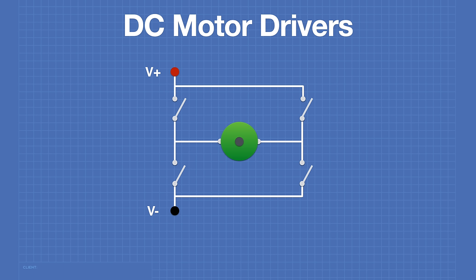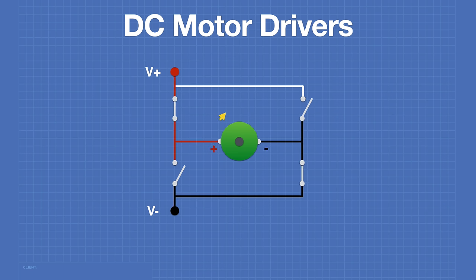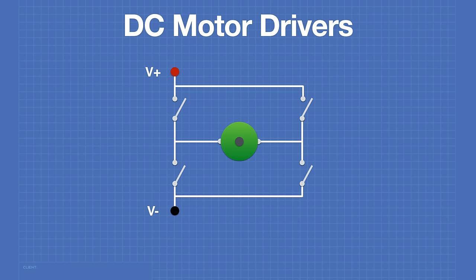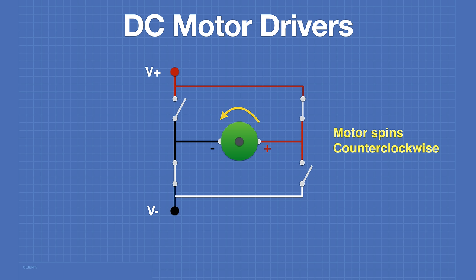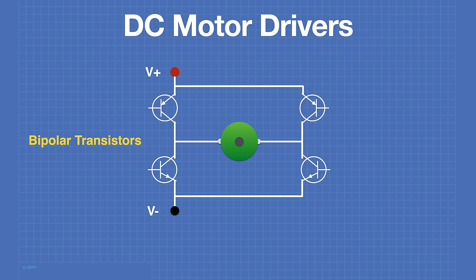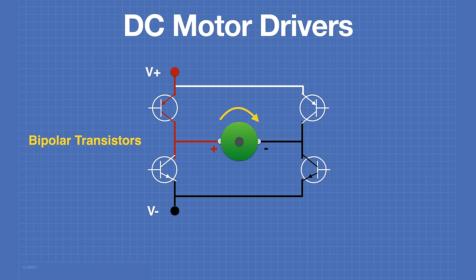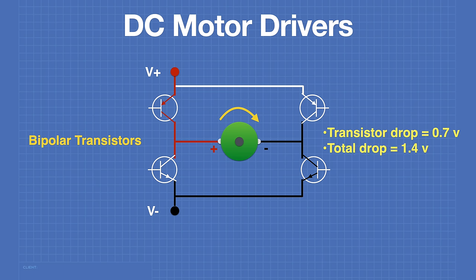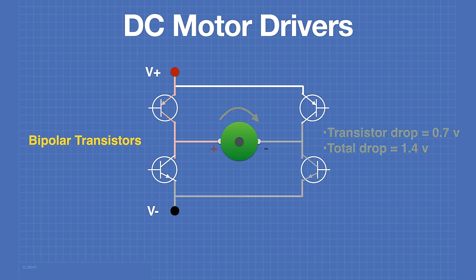An H-bridge looks like an H when drawn schematically and can be represented as four switches. When two switches are closed, current is applied to the motor in one polarity and the motor spins clockwise. Closing the other two switches reverses the polarity, spinning it counterclockwise. In real life we don't use physical switches. One method uses bipolar transistors — when current is applied to the base, they act as switches. However, there's a voltage drop of about 0.7 volts on each transistor, totaling 1.4 volts lost, dissipated as heat, so drivers using bipolar transistors often require large heat sinks.